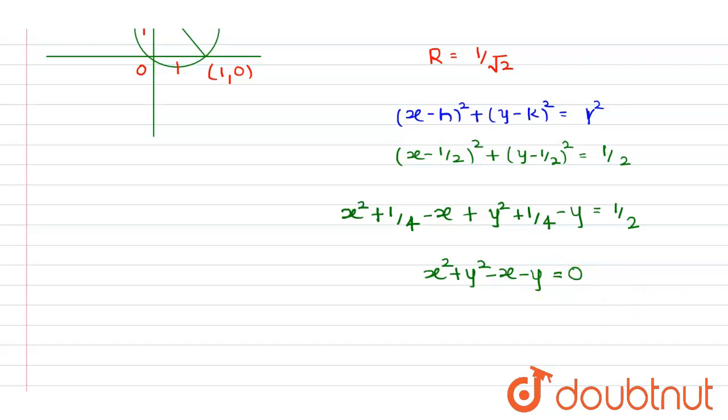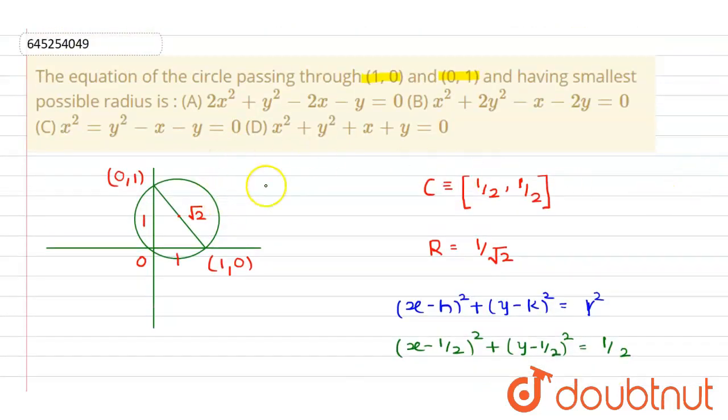This is our required equation of circle. Now let's check the option. Option C. Option C is correct. This should be plus. This should be plus.